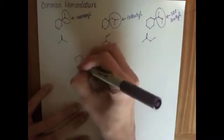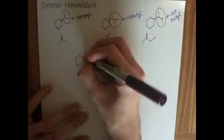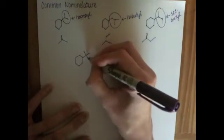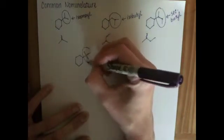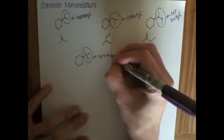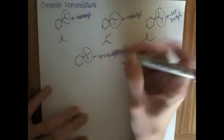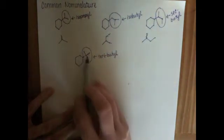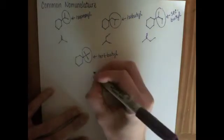And last but not least, we have another four carbon substituent, which takes this T-shape or a cross shape. This substituent is called the tert-butyl. It has four carbons, three arranged around a central carbon, and that central carbon is the point of attachment to the parent molecule.